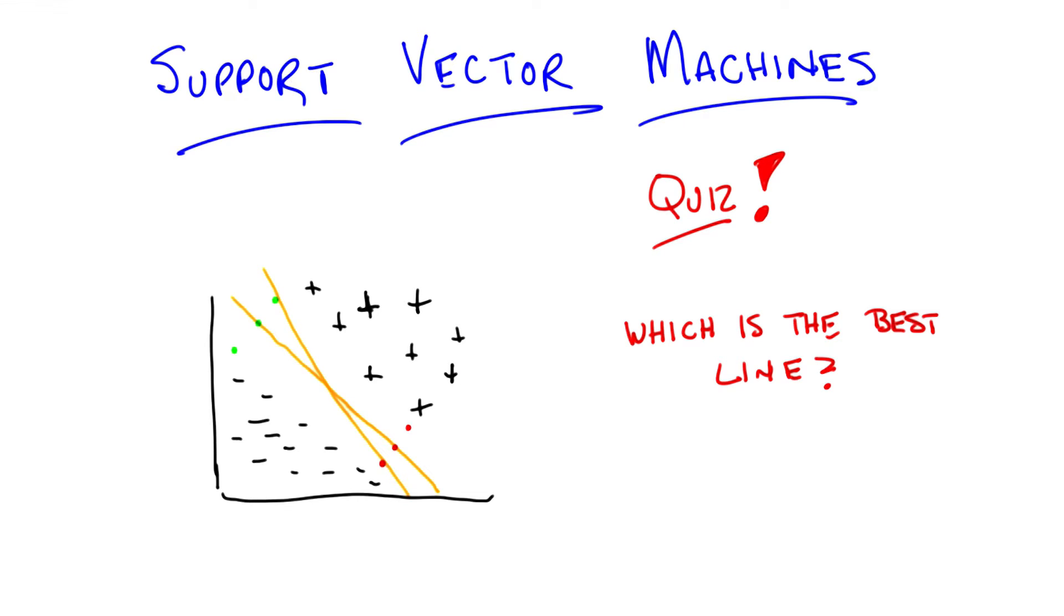Interesting. All right. Well, so one thing that second line, the orange line, has against it, in some senses, it seems to get really close to that bottom minus point. Maybe it's a little too close.